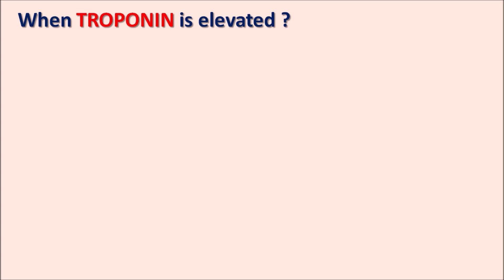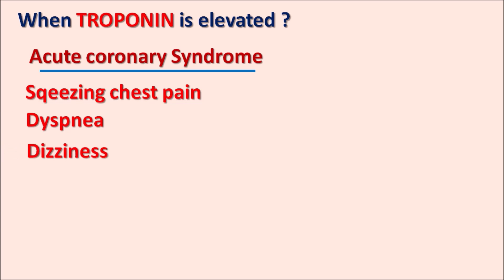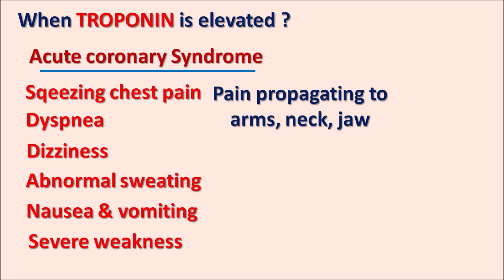When are troponin levels elevated? Troponin is elevated in case of acute coronary syndrome. If a patient has symptoms such as squeezing chest pain indicating unstable angina, dyspnea (difficulty in breathing), dizziness or lightheadedness, abnormal sudden sweating, nausea and vomiting, severe weakness, pain propagating to arms, neck, and jaw indicating anginal attack, or rapid heartbeats indicating possible atrial fibrillation — all these conditions may suggest acute coronary syndrome, and troponin levels should be checked to assess cardiac damage.